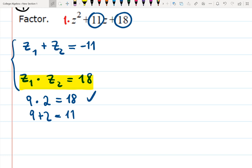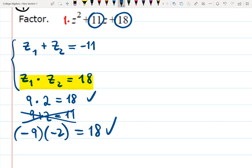Maybe it's not 9 and 2 then. Maybe it's minus 9 and minus 2. Let's check: minus 9 times minus 2 gives you 18, and minus 9 plus minus 2 will give you minus 11. Check.